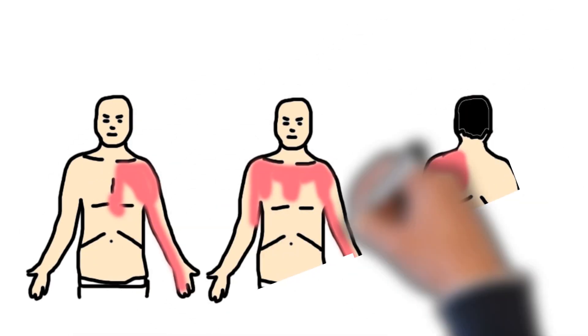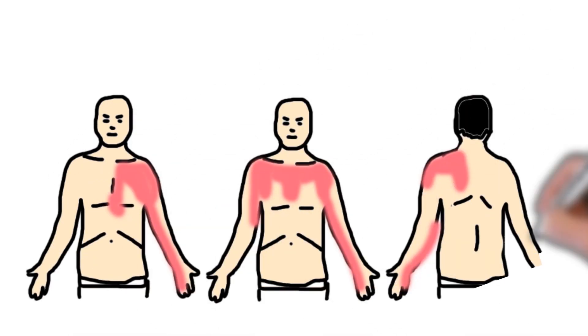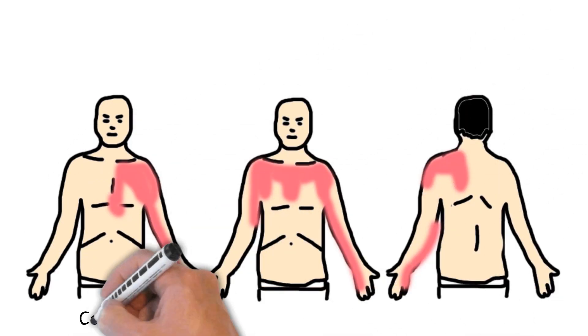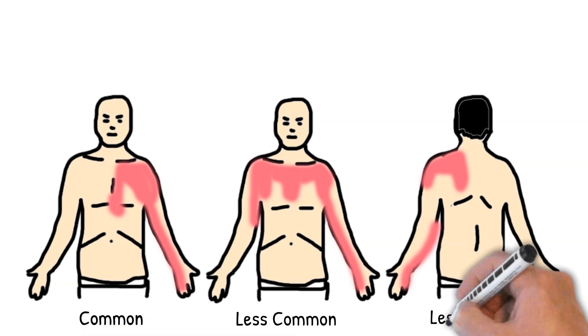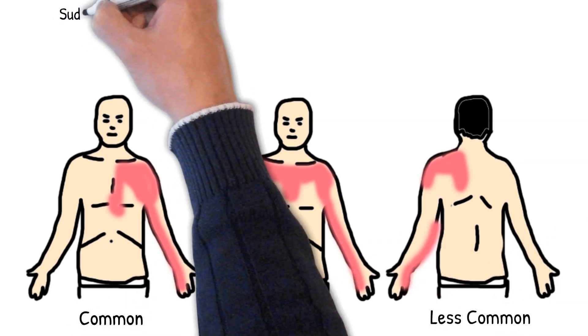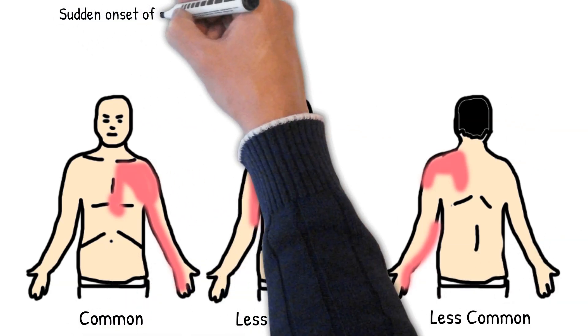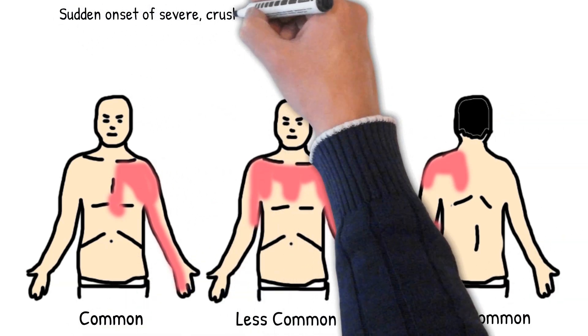Clinical findings of acute myocardial infarction include sudden onset of severe crushing retrosternal pain, with a sensation of tightness, pressure, or squeezing.